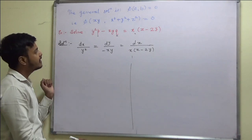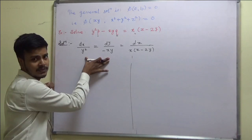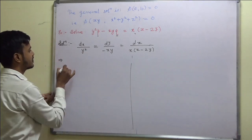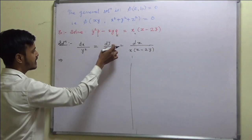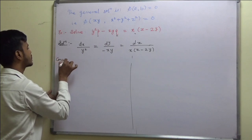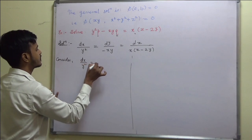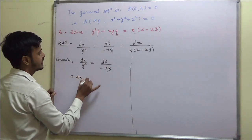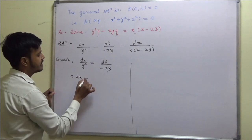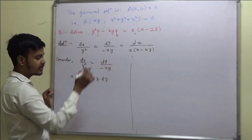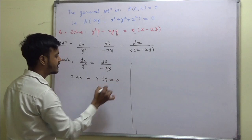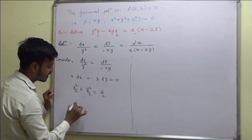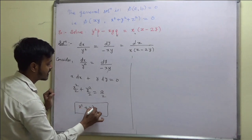Which method can be applied? Method 1. Taking the first two ratios, one y cancels, leaving x and y as separable variables. So dx/y = dy/(-xy) simplifies to x·dx = -y·dy. On integrating: x²/2 + y²/2 = a/2, giving the first integral curve x² + y² = a.